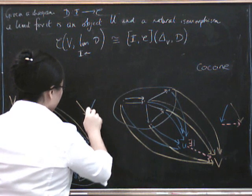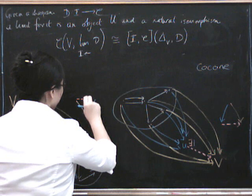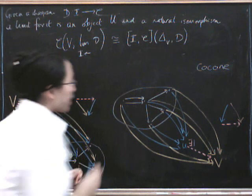Like this. So that was the commuting condition for the factorization over here.